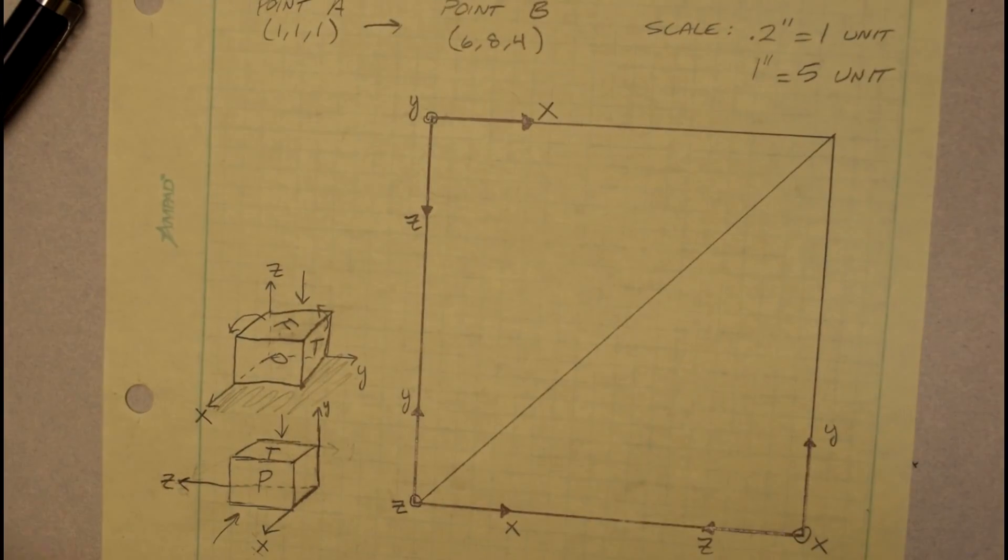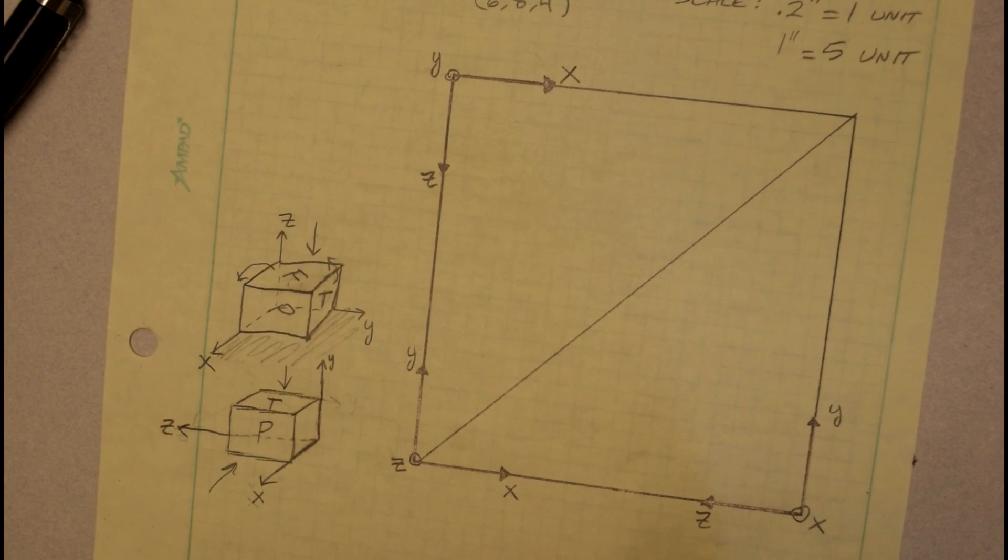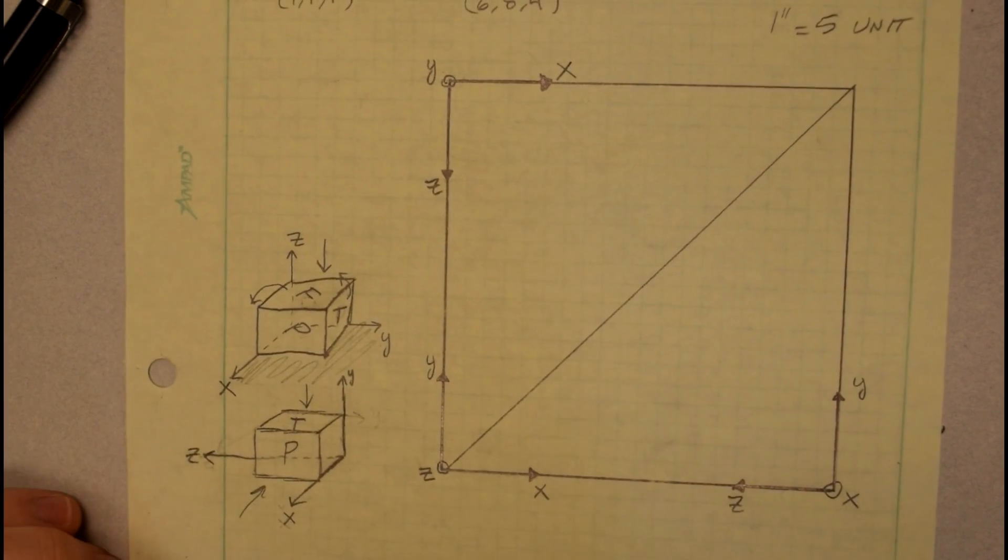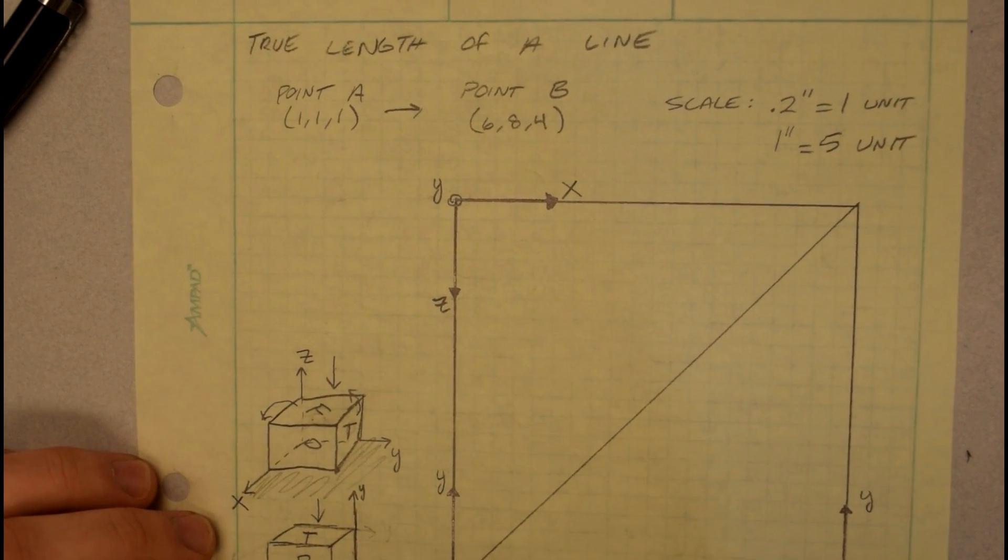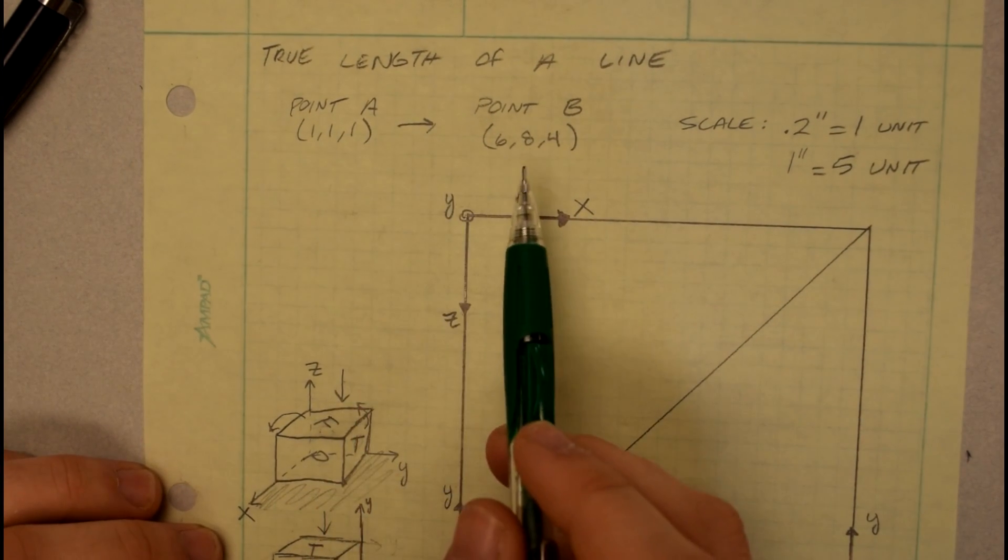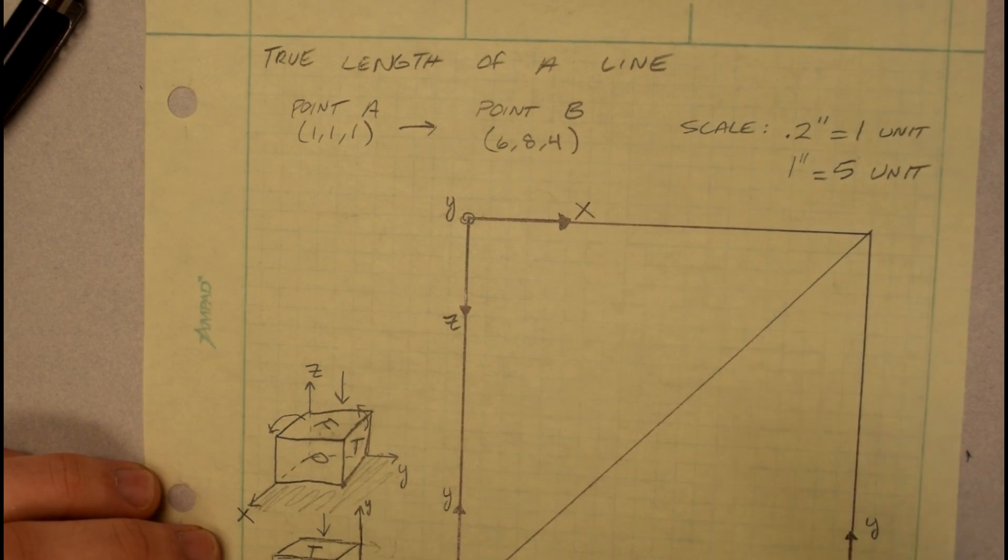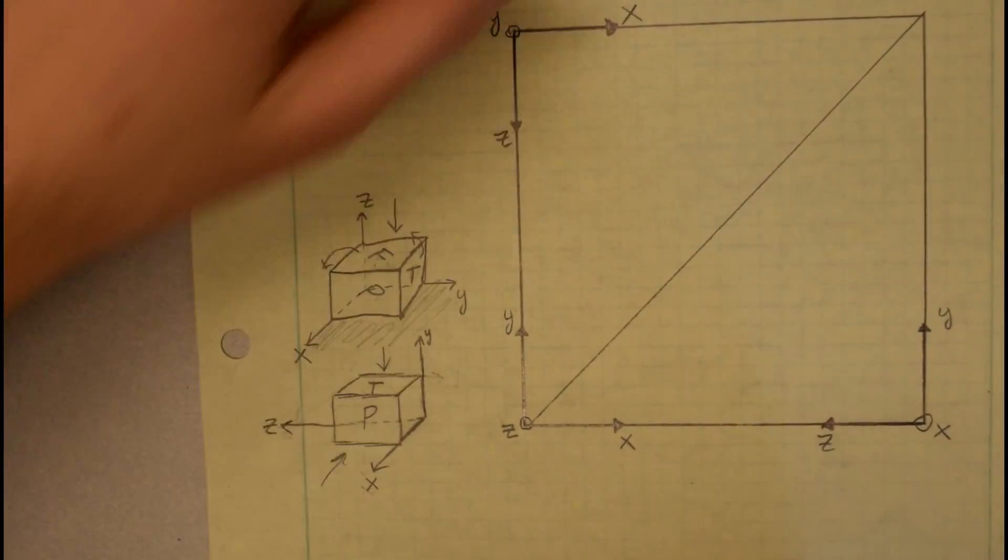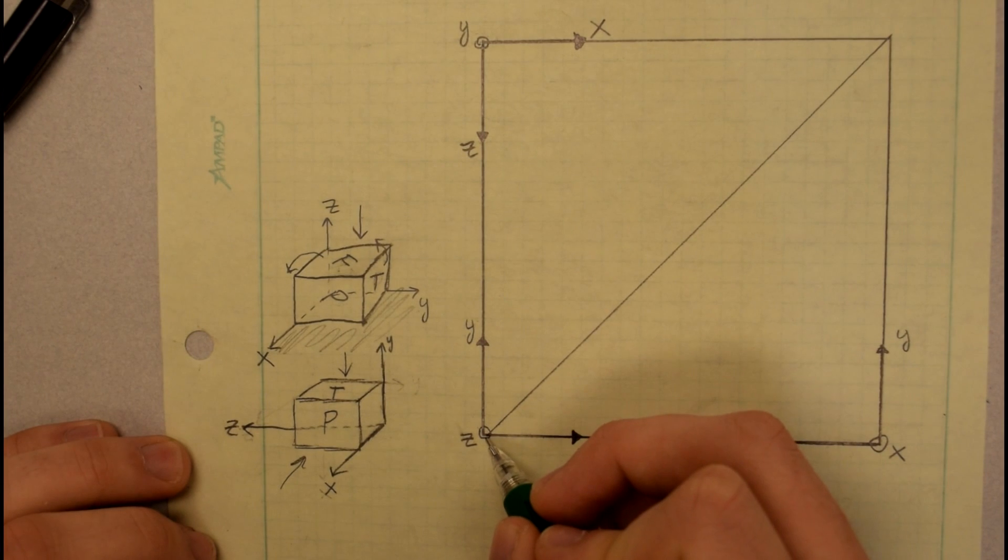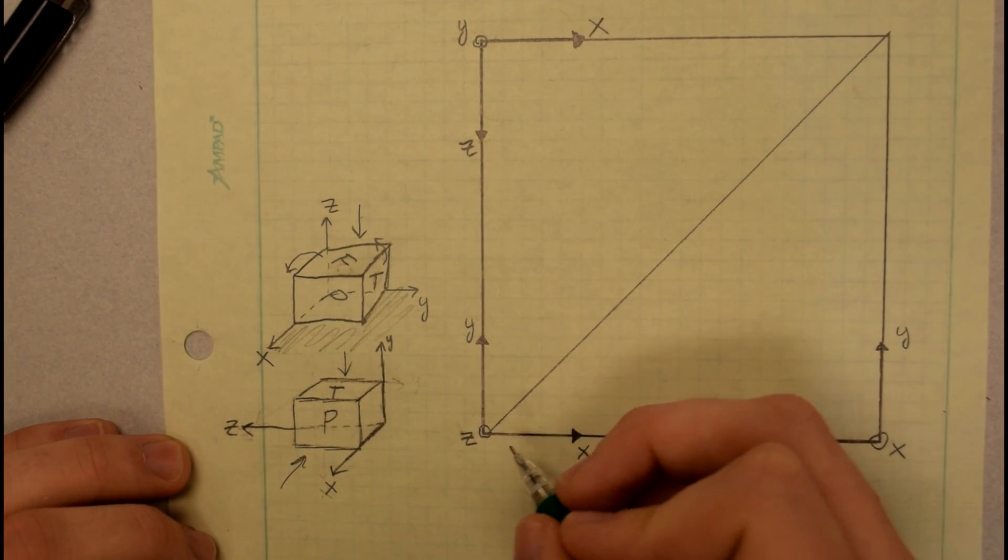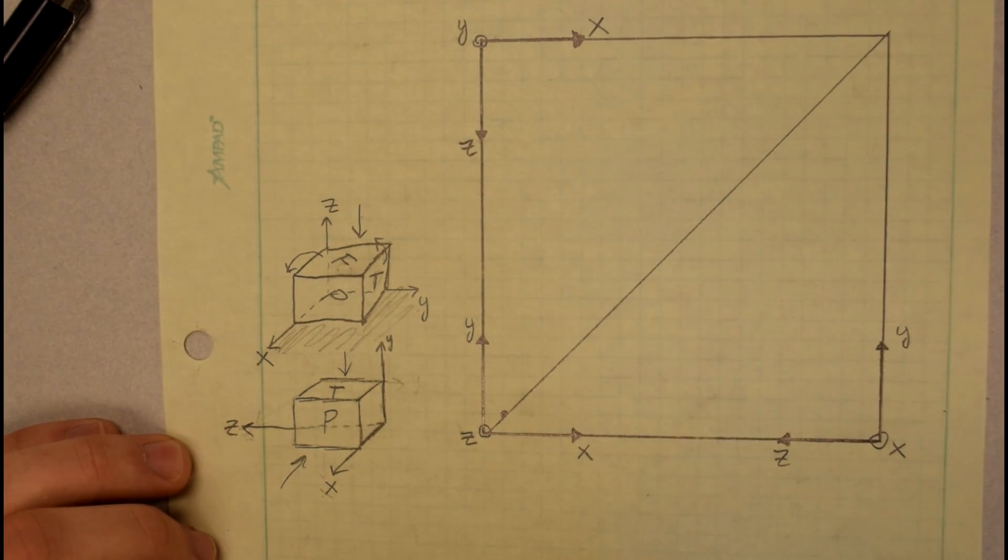Okay so my miter line's at a 45, which means I can project things out of one view into the other. So I'll go ahead and plot two points just with the coordinates, and then I'll project for the third one. So I'm going from point A to point B here. Point A I've chosen to be 1, 1, 1, and point B is going to be 6, 8, 4. So like I said, the scale lines up with the grid on my engineering paper. So to plot that first point, I'll start down here. Point A is 1 over in X and 1 up in Y. So there's my point A.